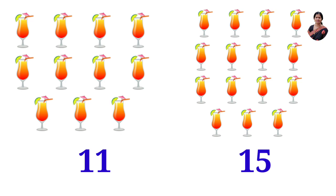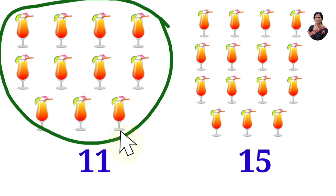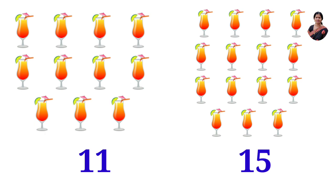So which side is having less number of juice glasses? This side. So encircle the side which is having less number.